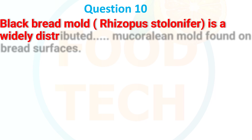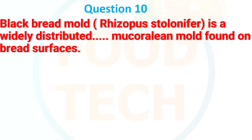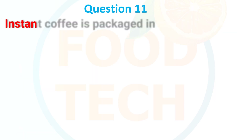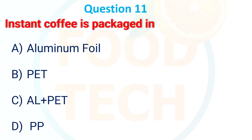Black bread mold is a widely distributed dash Mucor mold found on bread surface: a) thread-like, b) spotted, c) both, d) none. The answer is a) thread-like.